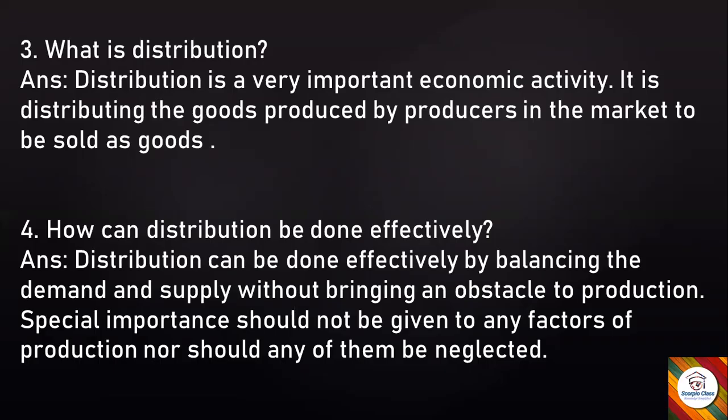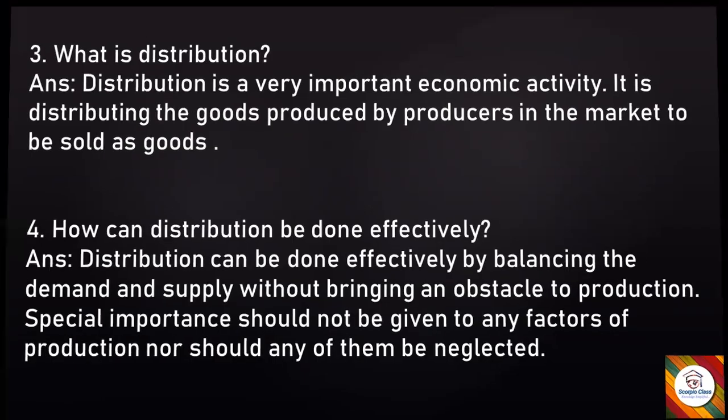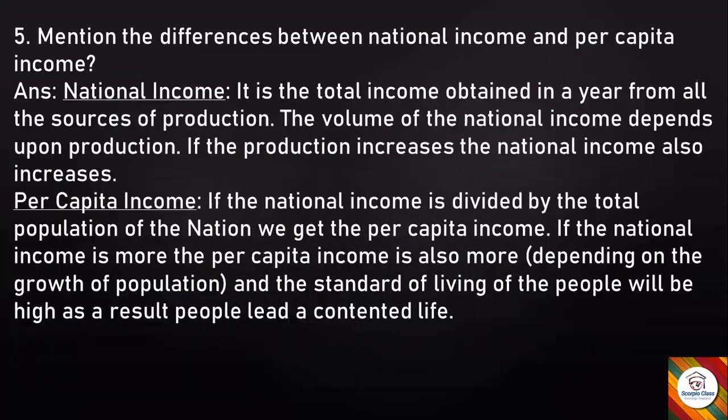Next question: How can distribution be done effectively? Answer: Distribution can be done effectively by balancing the demand and supply without bringing an obstacle to production. Special importance should not be given to any factors of production, nor should any of them be neglected.